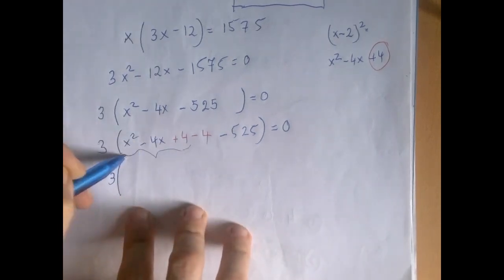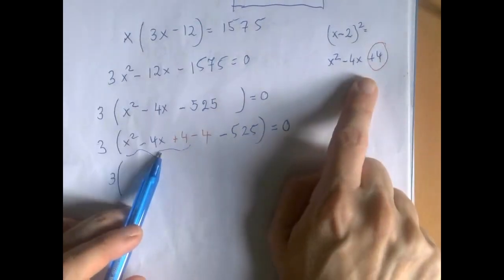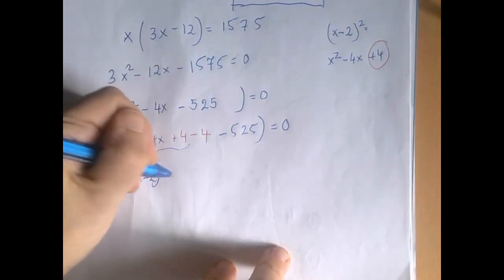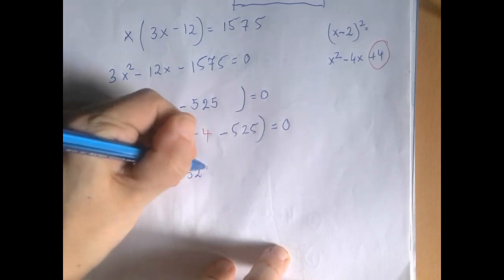The first 3 gets absorbed into the complete square. Indeed, x squared minus 4x plus 4 is x minus 2 squared. And negative 4 and negative 525 can be combined to negative 529.